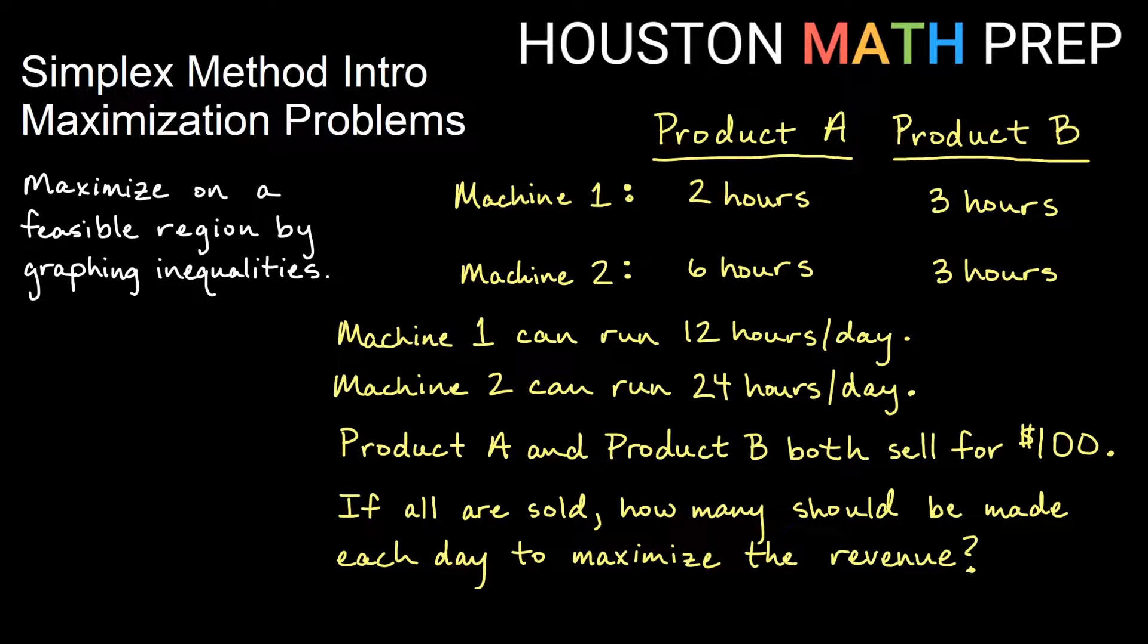Looking at my example here, I've got two products that my factory makes. They both require a certain number of hours on different machines. I've got machine one that can run for 12 hours a day, machine two can run 24 hours a day. Each of my products sells for $100 a piece, and if I sell all the stuff that I make, how much should I be making so that I maximize the amount of revenue that my factory gets.